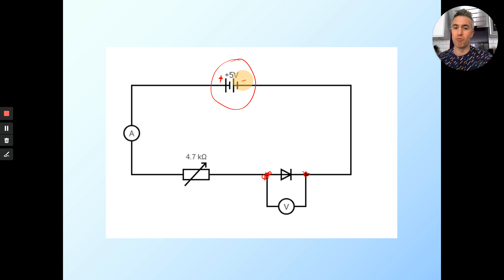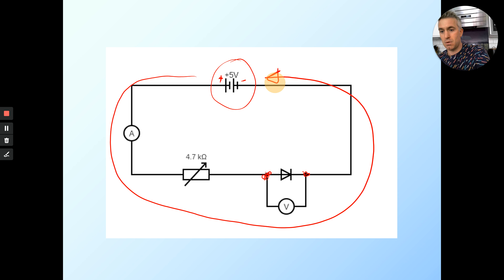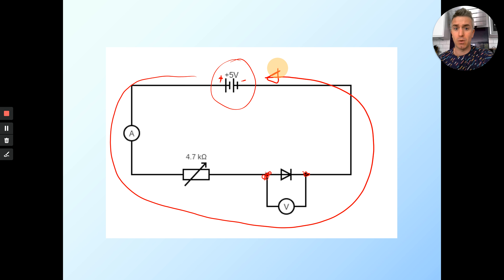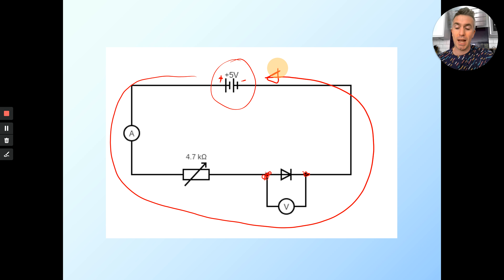Electric current goes from positive to negative. We know that's not correct for an electron because an electron is negative — it would be repelled from the negative terminal of the battery. So electrons actually go the other way around. But when you're drawing the circuit, you draw it in relation to the electric current, which goes from positive to negative. So if I orient the diode this way, it will work correctly in this circuit.